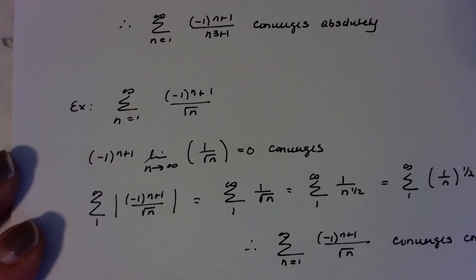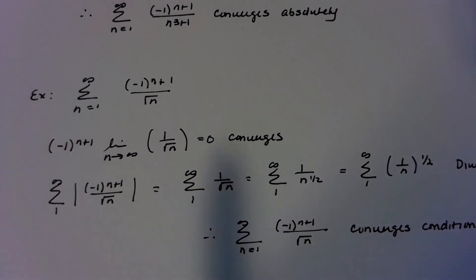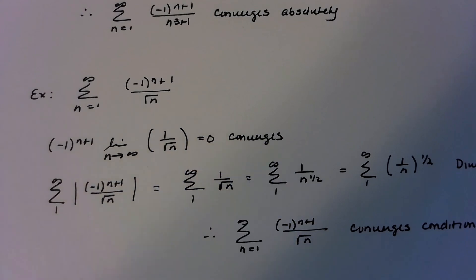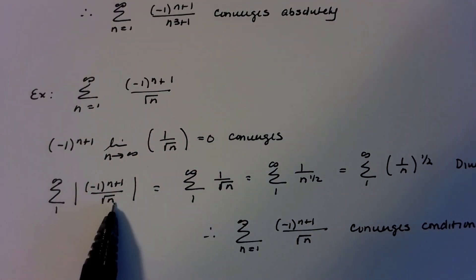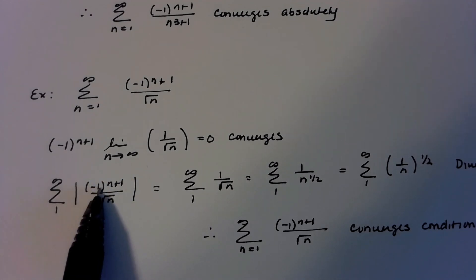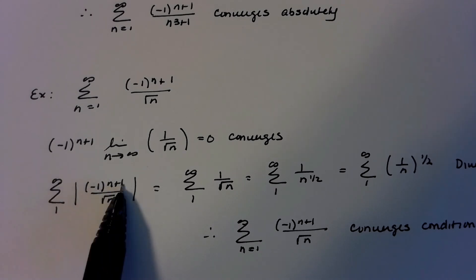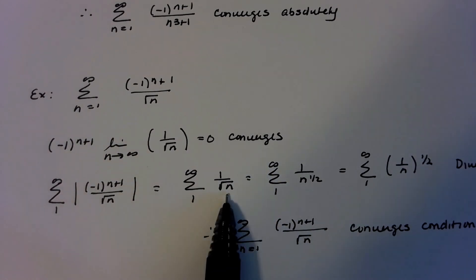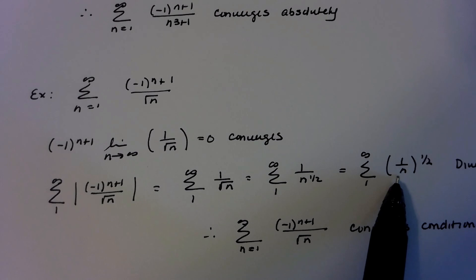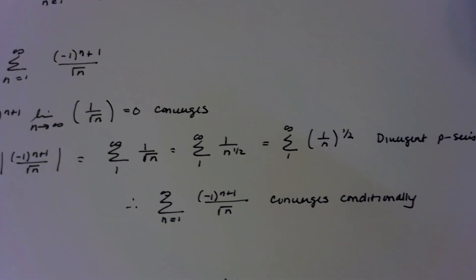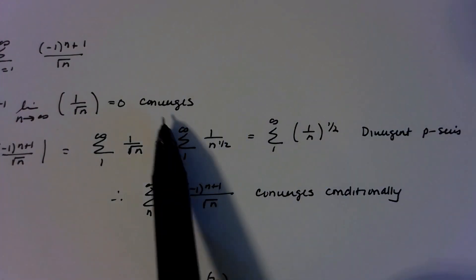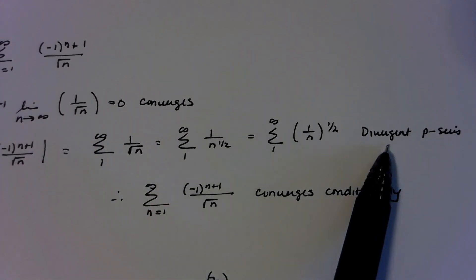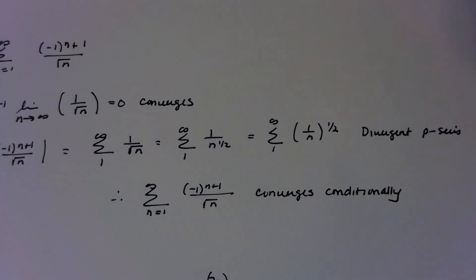Here's a conditional one. Pull out the alternating part, take the limit, get 0 — converges. Now take the absolute value of the original. Applying the absolute value makes the negative 1 become positive 1, giving 1 over root n, which is 1 over n to the one half — a divergent p-series. Since the alternating series converged but the absolute value diverges, this converges conditionally. I hope that helps — let me know if you want another video on ratio and root test, and I'll do that.